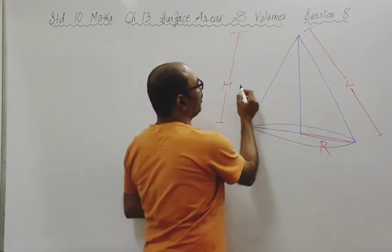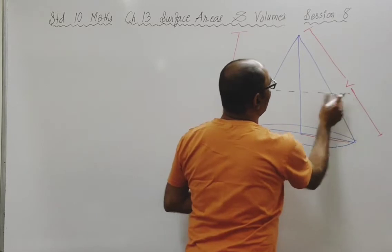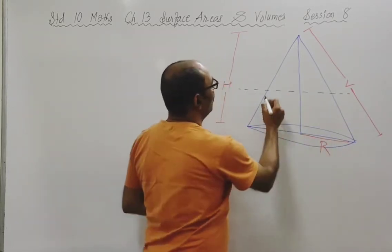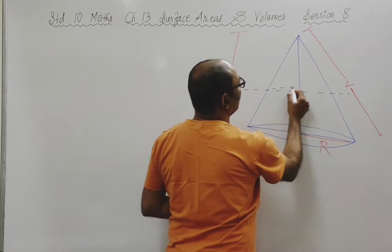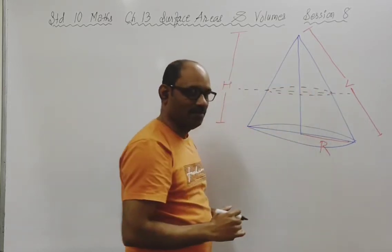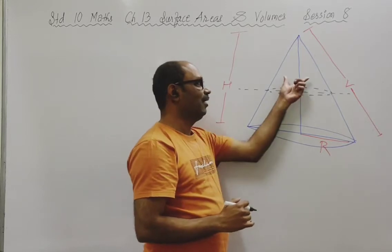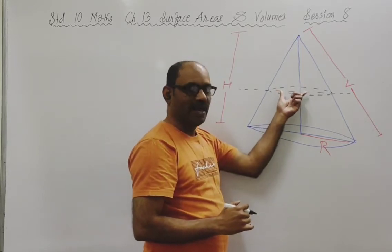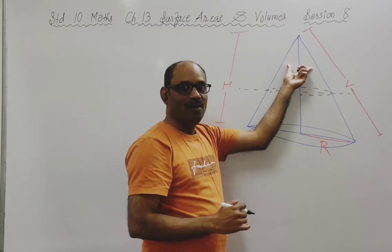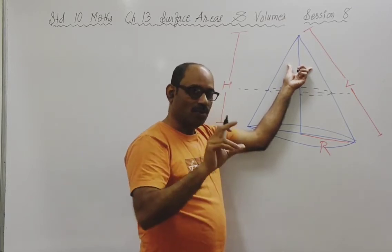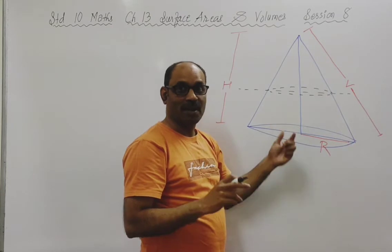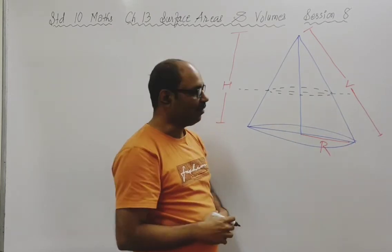Now what I am going to do to get a frustum of cone - I am going to cut it from somewhere, but this cutting plane has to be parallel to the base. I got two parts. When I cut the cone into two parts, I get one part in the form of a smaller cone, and the bottom part - the second part - is the frustum of cone.